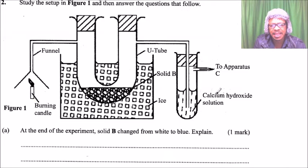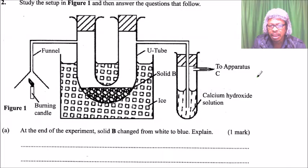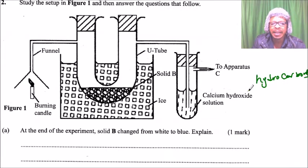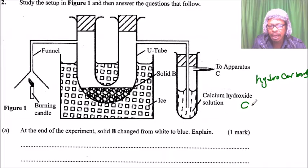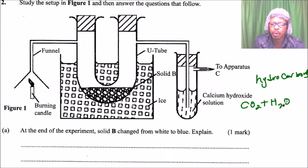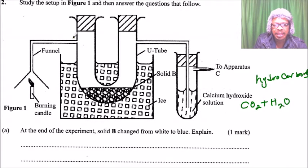Before going to the question itself, it is good to understand the system. The burning candle is in the group of hydrocarbons. When you burn hydrocarbons, they produce carbon dioxide plus water — so we have carbon dioxide and water molecules produced.